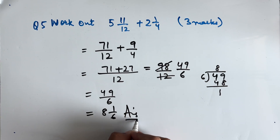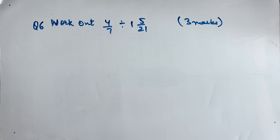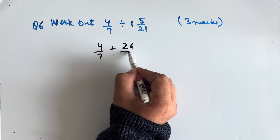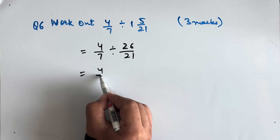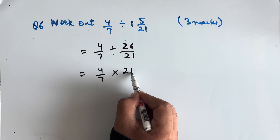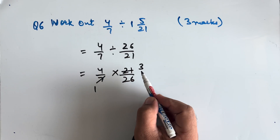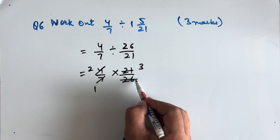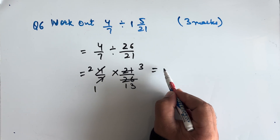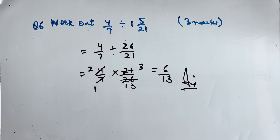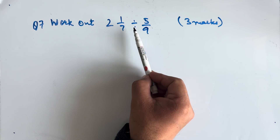Question 6: Work out 4/7 divided by 1 and 5/21. 1 and 5/21 can be written as 26/21. So this becomes 4/7 × 21/26. Cancelling: 7 threes are 21 and 2 twos are 4, giving us 6/13 as our final answer.